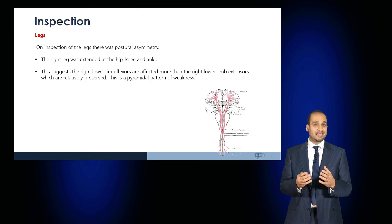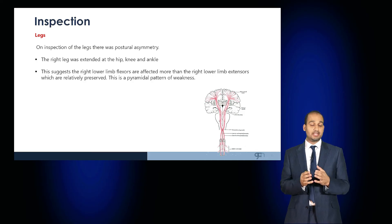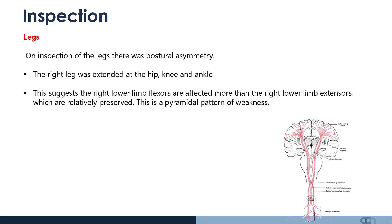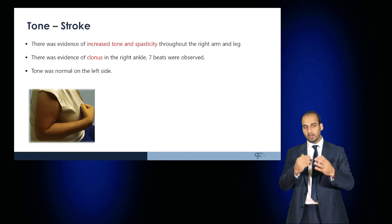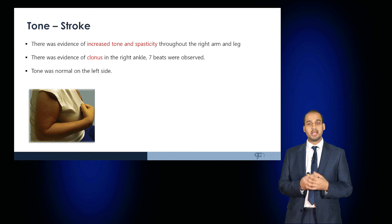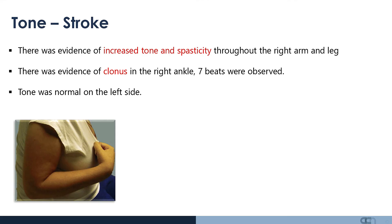Comparing that to the legs — pyramidal weakness means the flexors are affected more than the extensors, so we would expect extension. A patient with a lower limb stroke would likely have an extended hip, extended knee and extended ankle. When we examine the tone, we would expect increased tone and spasticity throughout, with evidence of clonus in the right ankle.